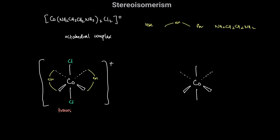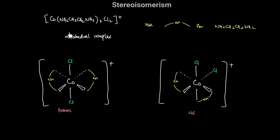The other possibility is the cis isomer, where the two chlorines are 90 degrees from each other and the two bidentate ligands are on the other side. In the cis isomer the chlorines are on the same side, 90 degrees from each other, and this complex also has an overall charge of +1.